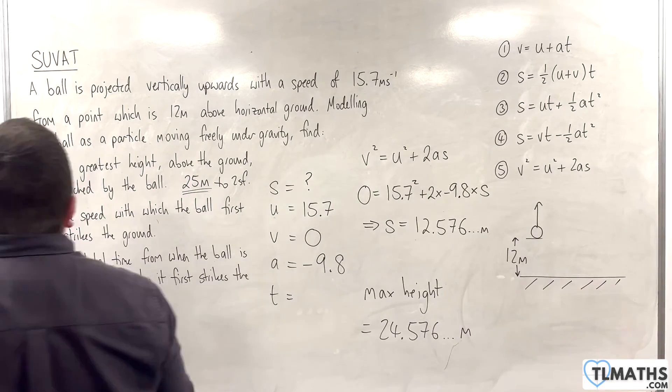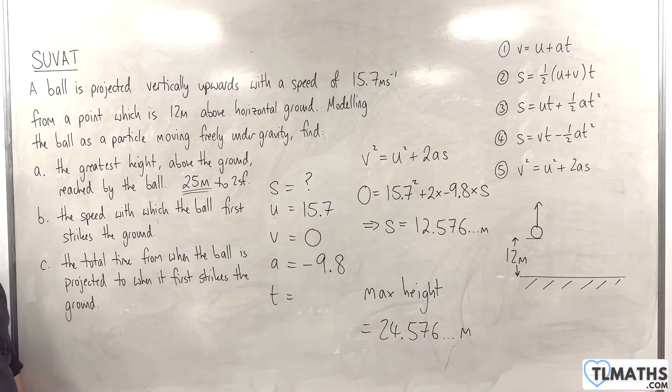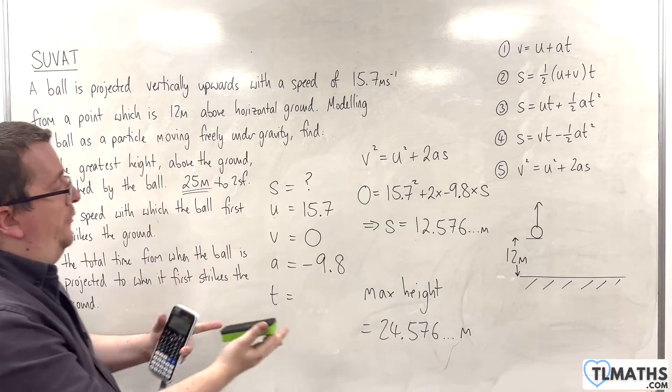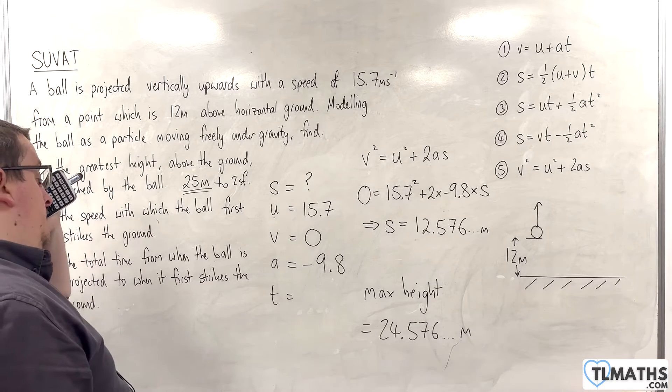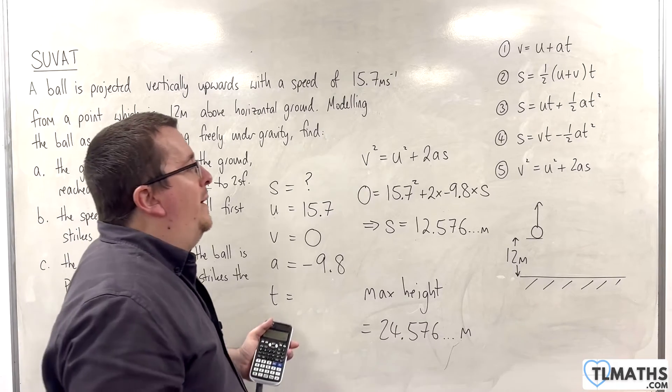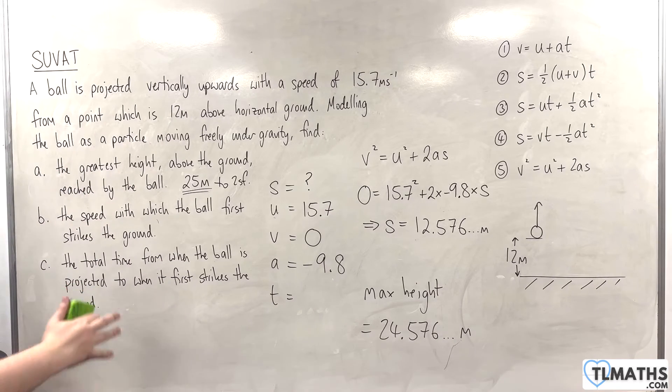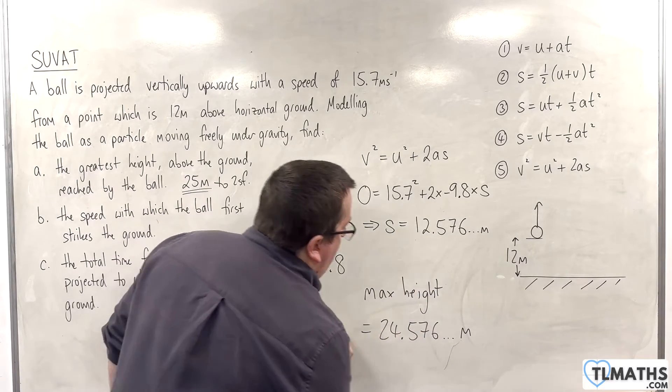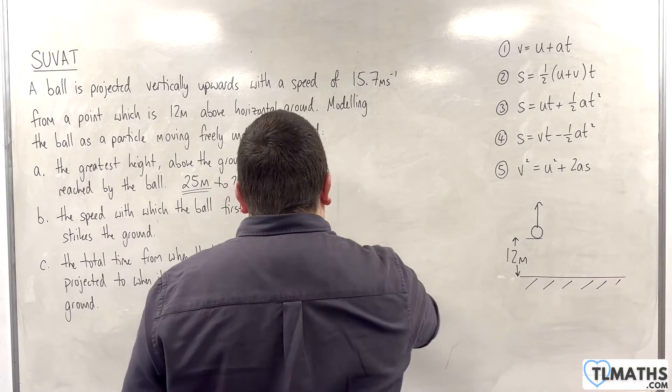Okay, now the next question asks, find the speed with which the ball first strikes the ground. Some people might want to use that previous result to work through the next bit. But, what if it's wrong? So, in the exam, if I can tackle the question without using a result from part A and go at it from scratch, then I may have more luck getting the answer right. So that's what I'm going to do.